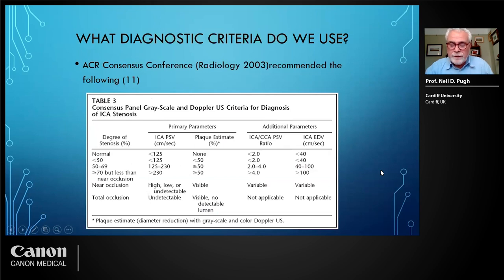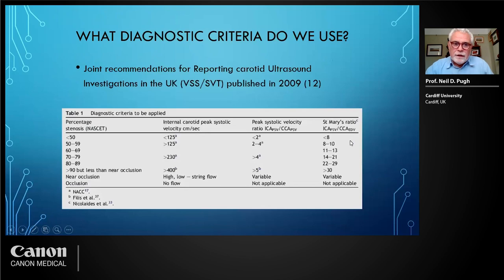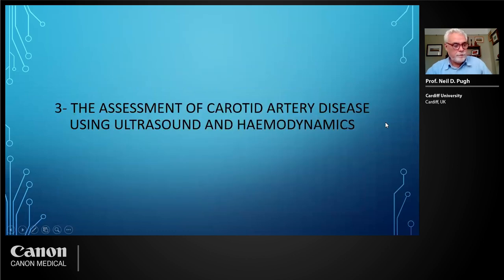The criteria were further developed by the American Congress of Radiology, giving primary parameters of 125 cm/s for less than 50% stenosis and 230 cm/s for greater than 70% stenosis. They also recommended estimating plaque stenosis. This was corroborated in 2009 by another UK recommendation that came out with very similar velocity thresholds.